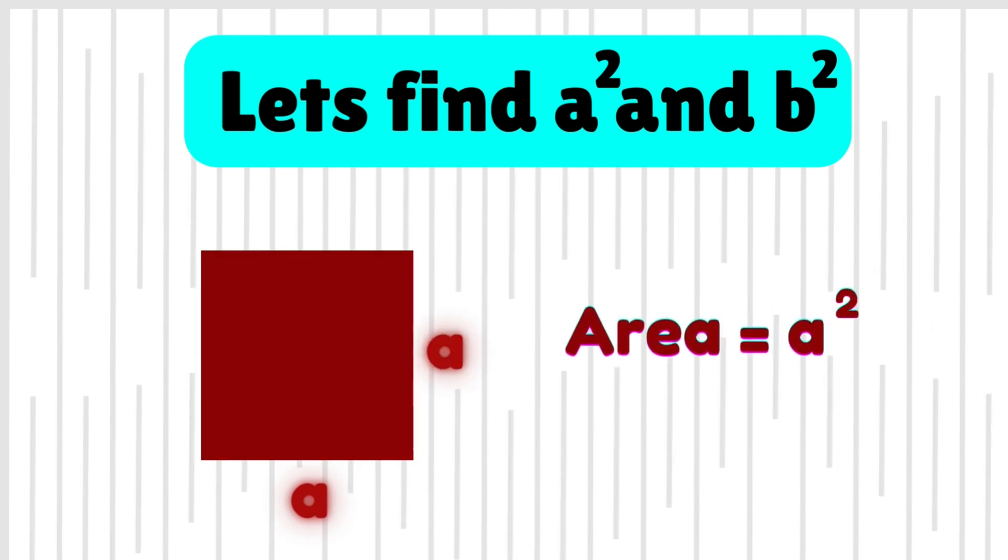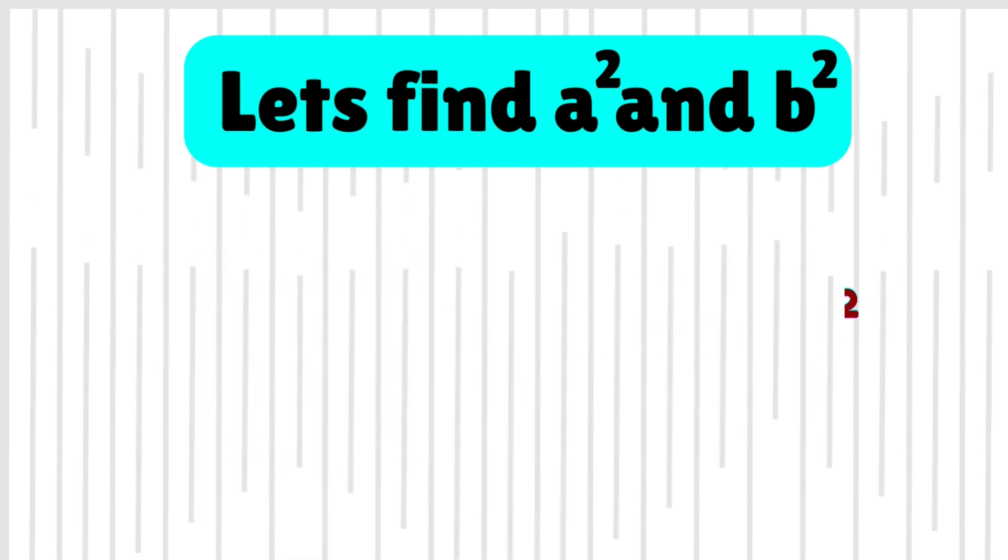Area of red box will be a square and area of yellow box will be b square.